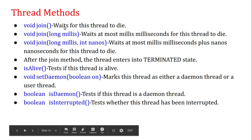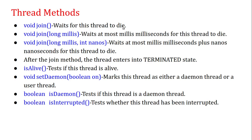void join() — waits for this thread to die; after it, the thread state will be terminated. void join(long milliseconds) — waits at most the specified milliseconds for this thread to die. After the join method, the thread enters into the terminated state.